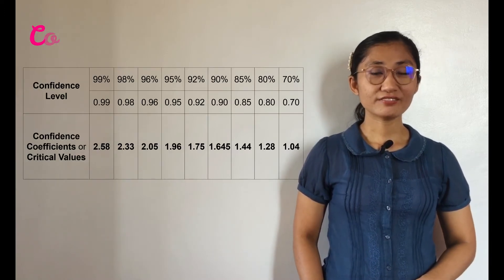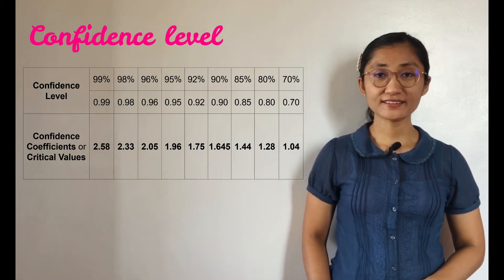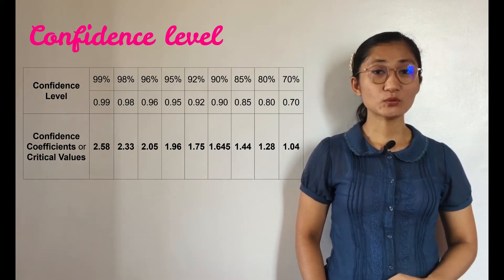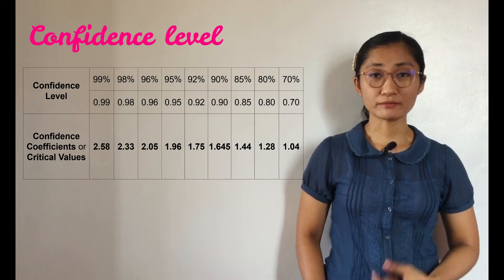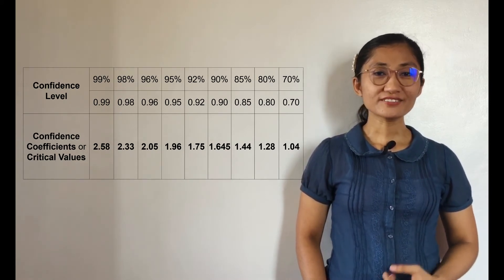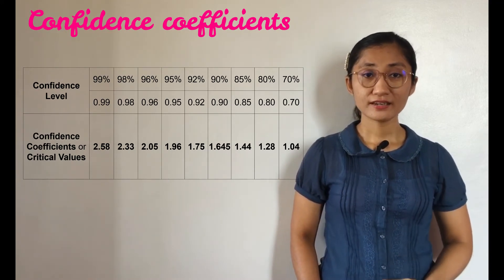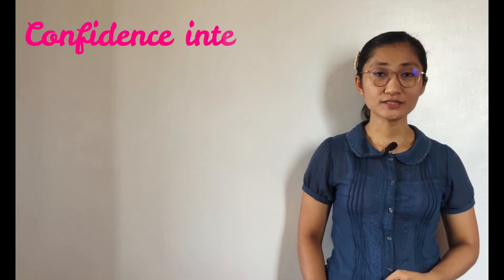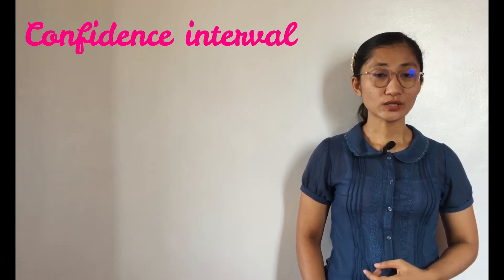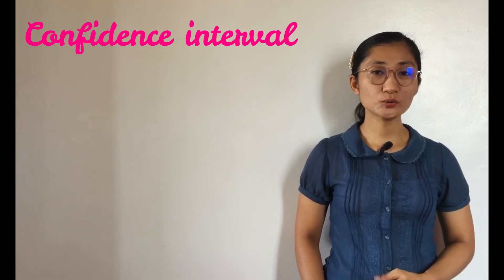Confidence level of an interval estimate of a parameter refers to the probability that the parameter is contained in the interval estimate. It describes what percentage of intervals for many different samples contains the unknown population parameter. Confidence coefficients are corresponding coefficients of confidence levels, and they are used to find the margin of error. Confidence interval or interval estimate is a range of values that is used in estimating a parameter. Note, however, that this interval estimate may or may not contain the true parameter variable.